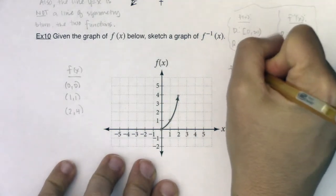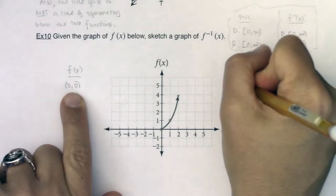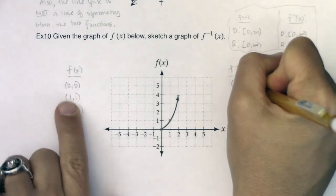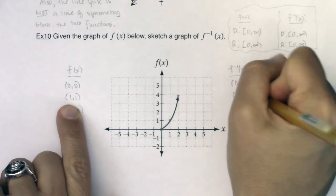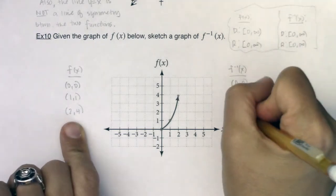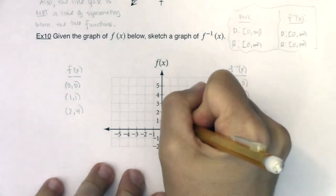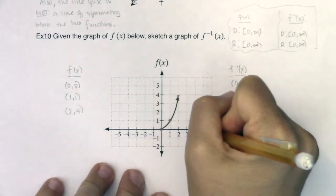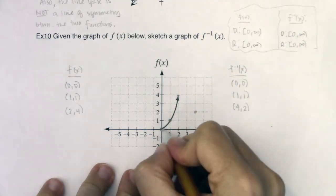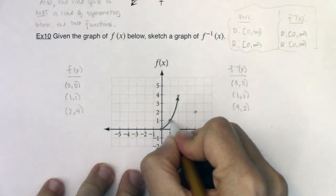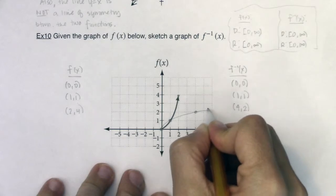To find the inverse, I'll swap x's and y's. (0,0) reflects on itself, and (1,1) stays the same. But (2,4) becomes (4,2). So I'll keep (0,0), keep (1,1), but plot (4,2). That helps me see my graph coming out this way.